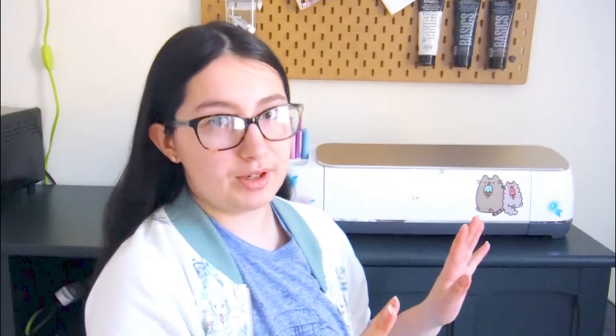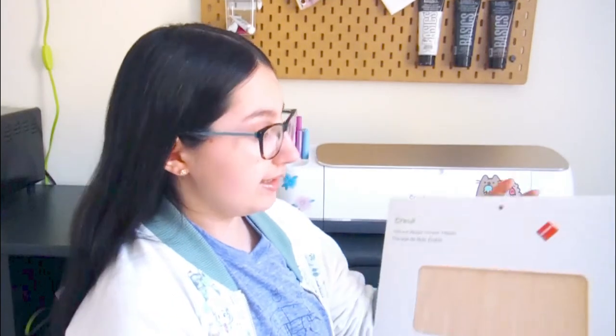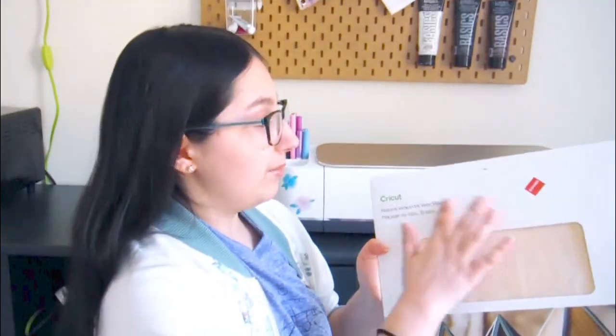So the first step of our project is to make the hoop that we are going to tie all of our paper cranes to and make them dangle. Now the material I am going to be using for the hoop is this natural wood veneer. This is the Cricut name brand and as you can see I got it all on clearance. Look at me, saving money, bargain hunting.